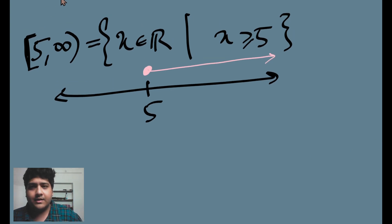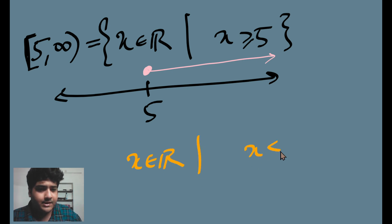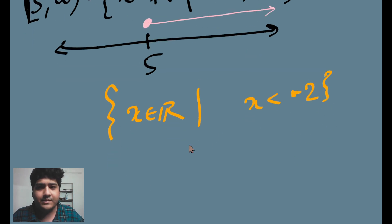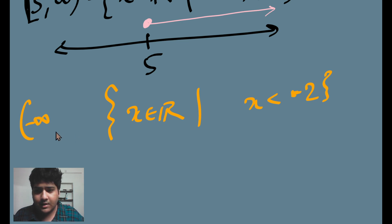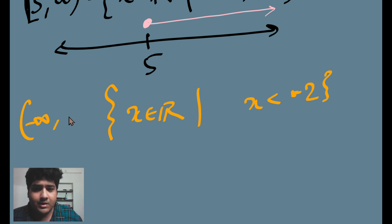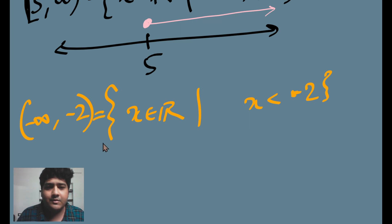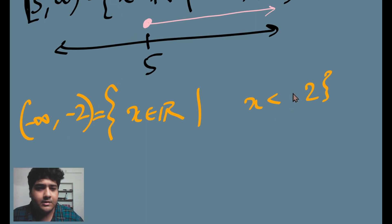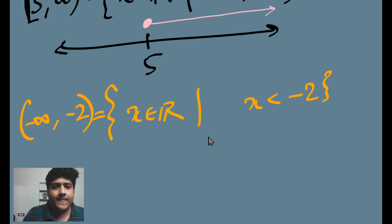Similarly, to represent all X in R such that X < −2, we write (−∞, −2). The negative infinity symbol indicates the interval extends without bound to the left, and −2 is excluded so we put a round bracket on it.